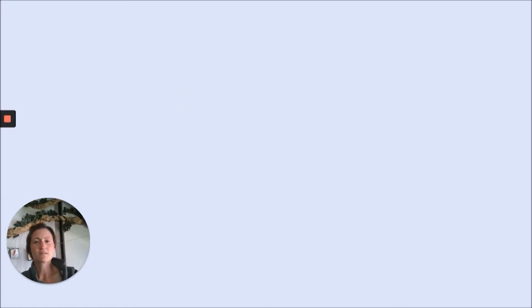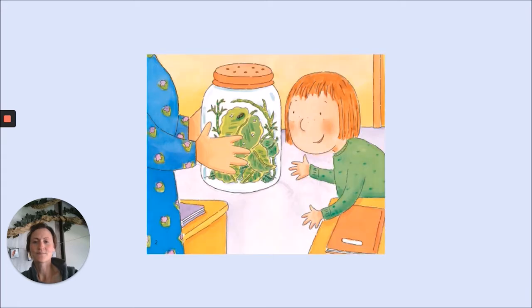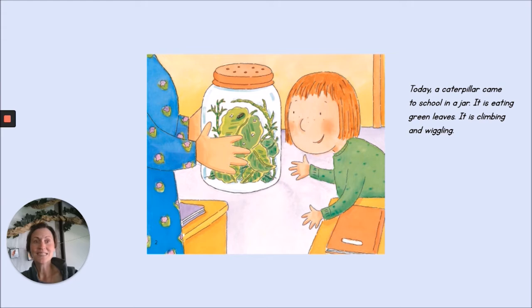Readers, what was the butterfly like when it first came into the classroom? Let's look back at the text and find out. The author wrote: "Today, a caterpillar came to school in a jar. It is eating green leaves. It is climbing and wiggling." So when our butterfly first came to school, it wasn't a butterfly at all — it was a tiny caterpillar in a jar.